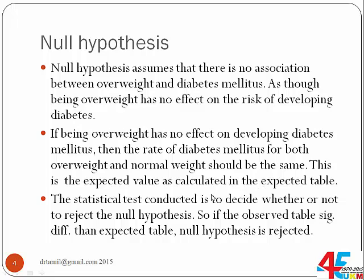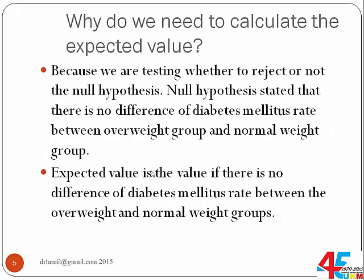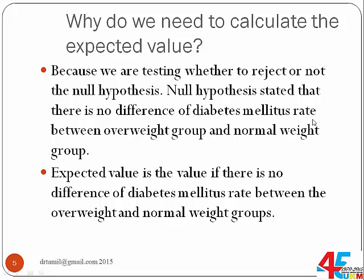The statistical test is conducted to decide whether or not to reject the null hypothesis. If the observed table is significantly different from the expected table, then the null hypothesis would be rejected. Whenever we give you a Chi-square question, you always have to calculate the expected value — because we want to decide whether to reject or not reject the null hypothesis, which states there is no difference in diabetes mellitus rate between the overweight and normal weight groups.